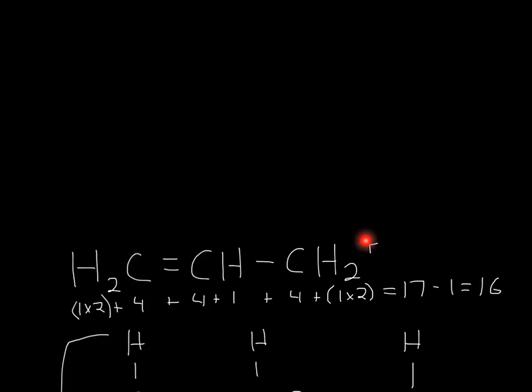When it has a plus charge, that means there's one less electron, so you do 17 minus 1 equals 16. So there should be a total of 16 electrons in your structure.